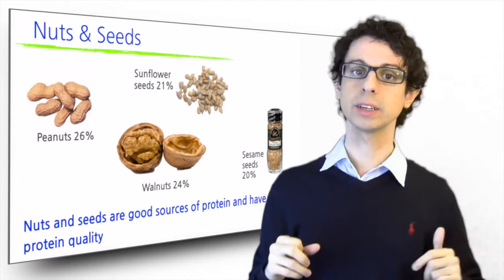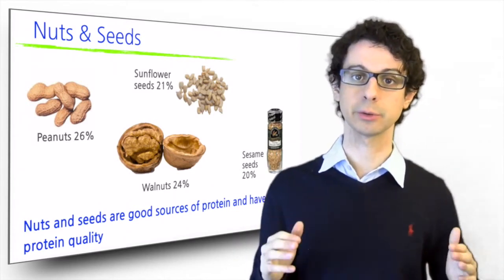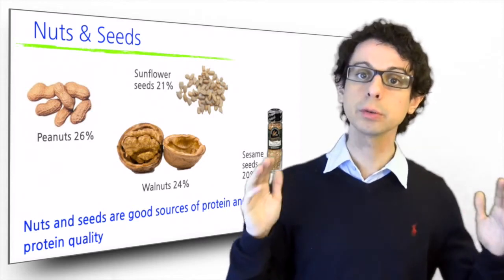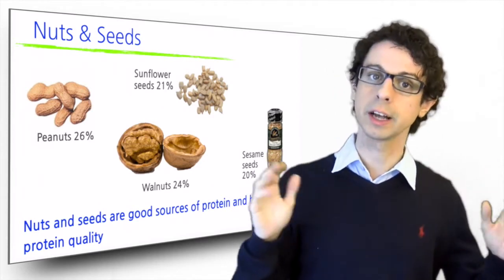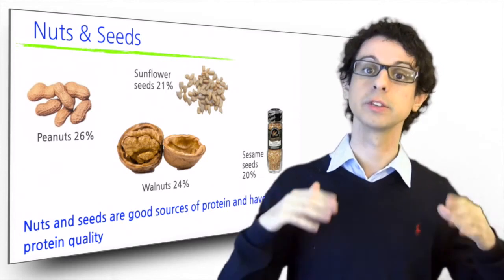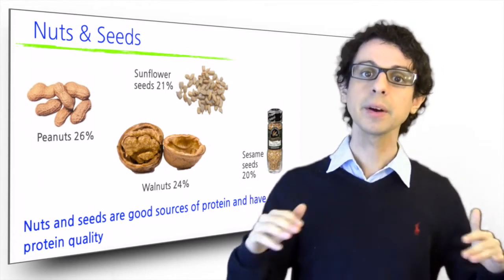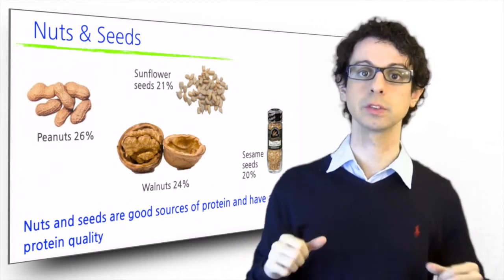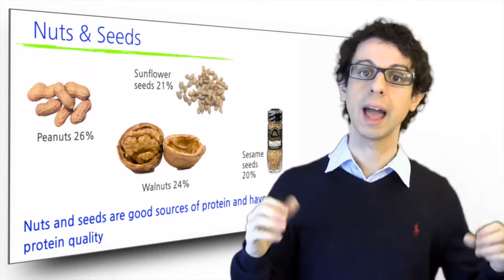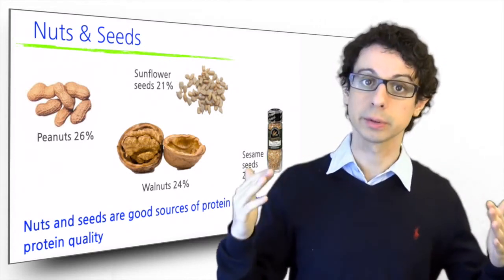They have between 20 and 26 grams of proteins per 100 grams and a pretty good protein quality. Not as good as the animal sources, they could use a touch of extra lysine but overall it's very good. However they are very energy dense foods so we can only eat so much and we certainly couldn't get all of our proteins from them.